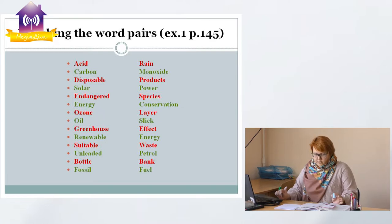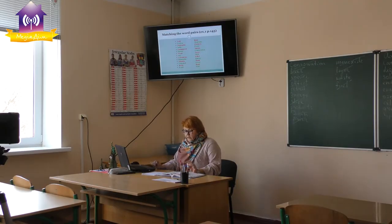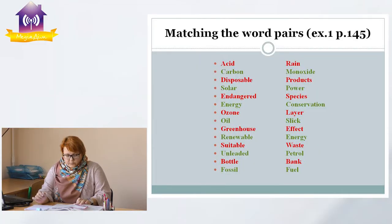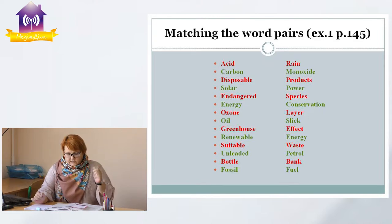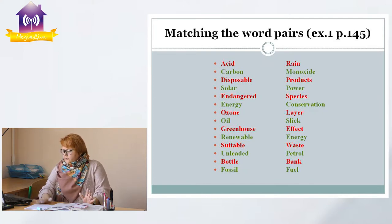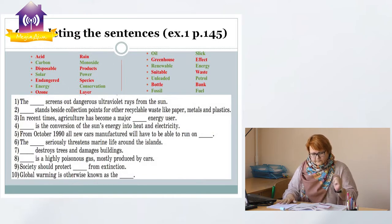Now it's time to do the second part of this exercise. We have to use these words — after all, what do we learn words for? Of course for using them! Here are 10 sentences and we have to put these 14 word pairs into the sentences, which means that four pairs will not be used. Let's look: the first sentence — something 'screens out dangerous ultraviolet rays from the sun.' What can stop ultraviolet rays?